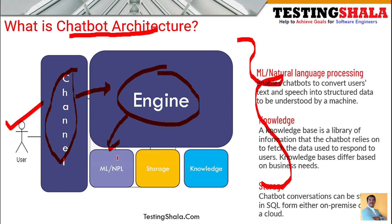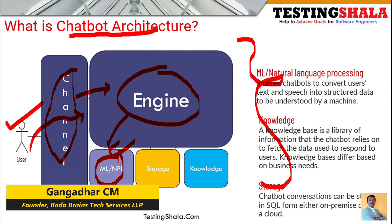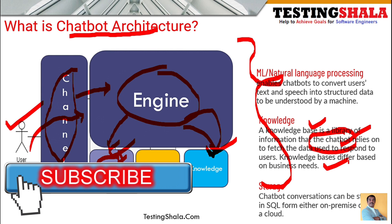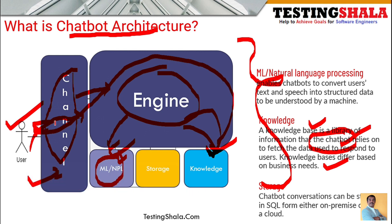The chatbot application makes use of various different modules to process the chatbot request. It makes use of machine learning and natural language processing programs to convert and analyze whatever the user sends in the chat using artificial intelligence programming. It also makes use of a knowledge-based library of information, because when you ask certain questions, the chatbot validates whether similar questions are available and what the answers are, and based on that it responds back to the end user.